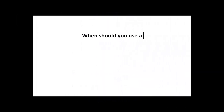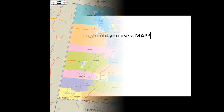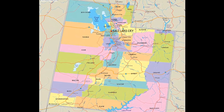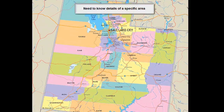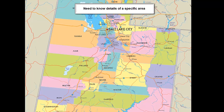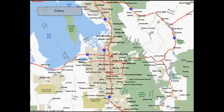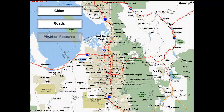So when should we use a map? Maps should be used when we need to know the details of a specific area, such as knowing the cities, roads, and physical features of a region like the map of Salt Lake City shown here.